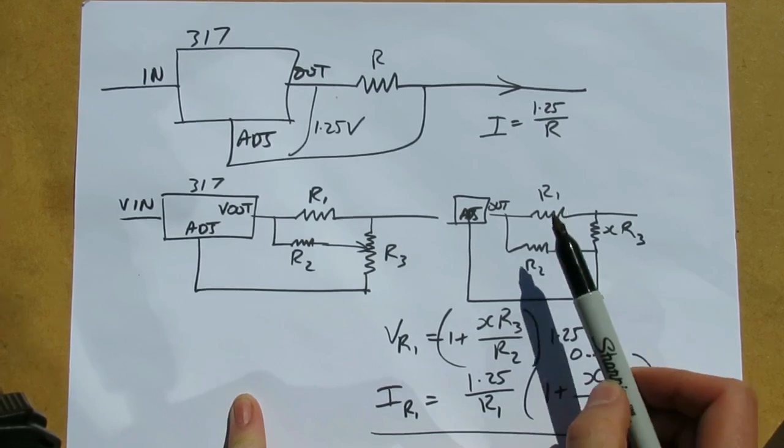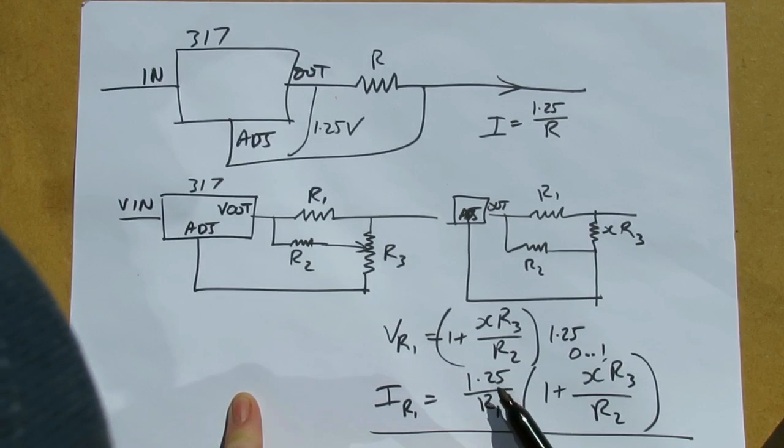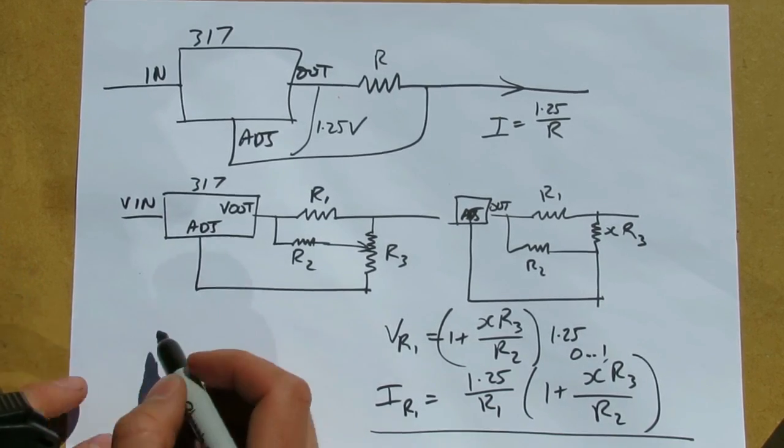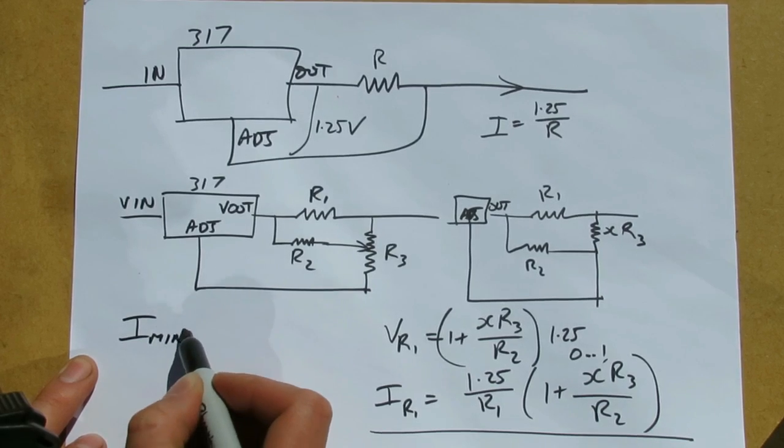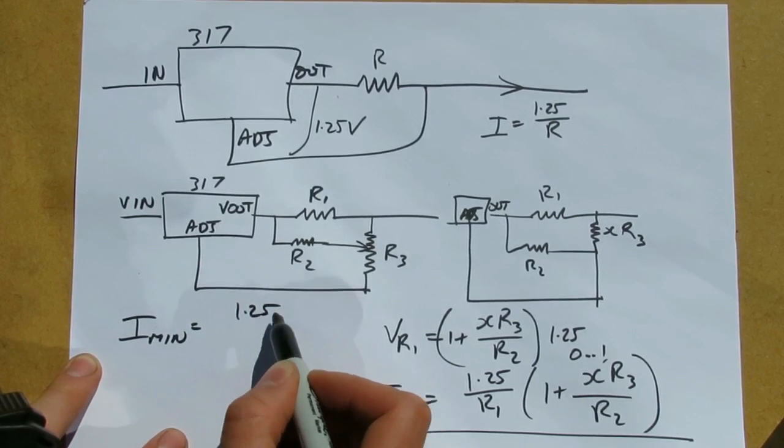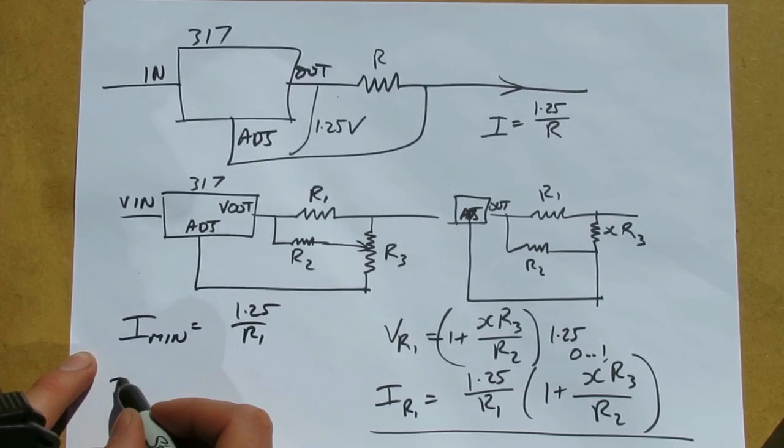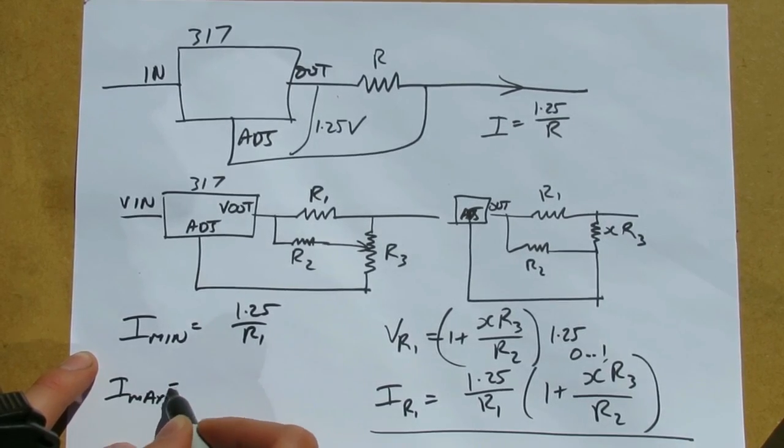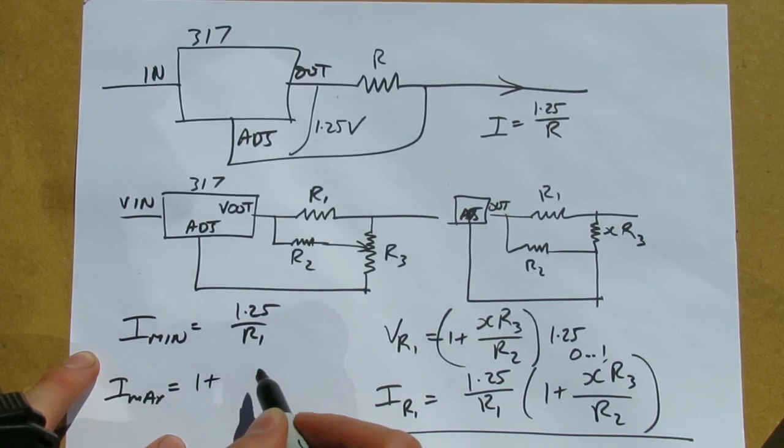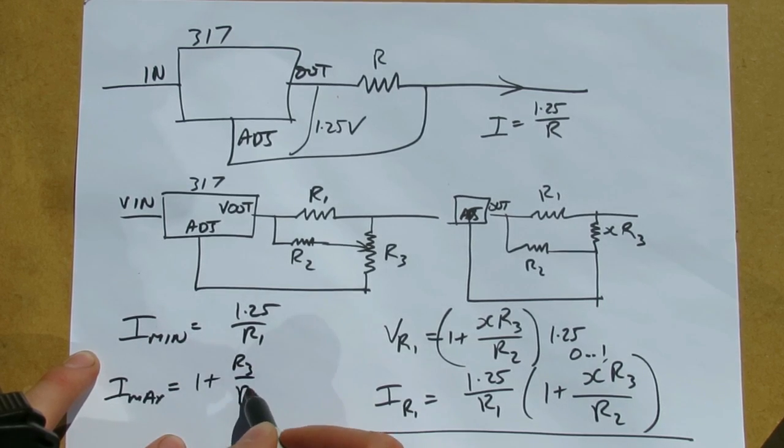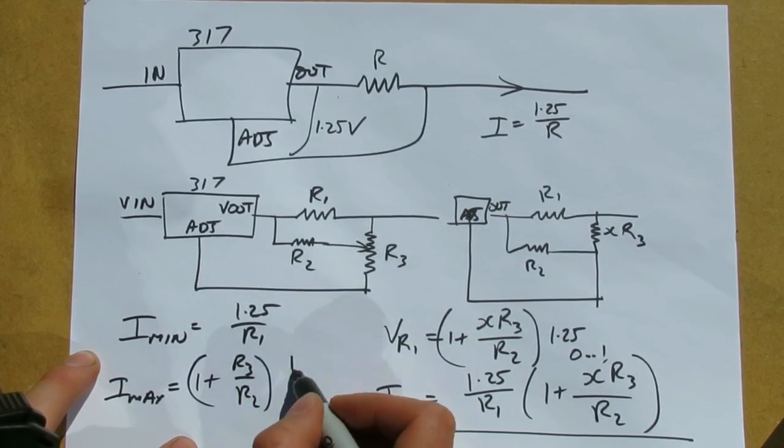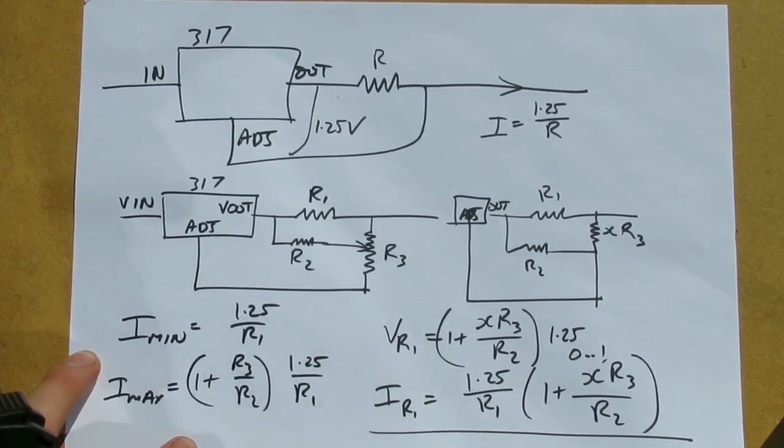We can vary the output current anywhere from 1.25 over R1. Imin is 1.25 over R1, and Imax is 1 plus R3 over R2 times 1.25 over R1.